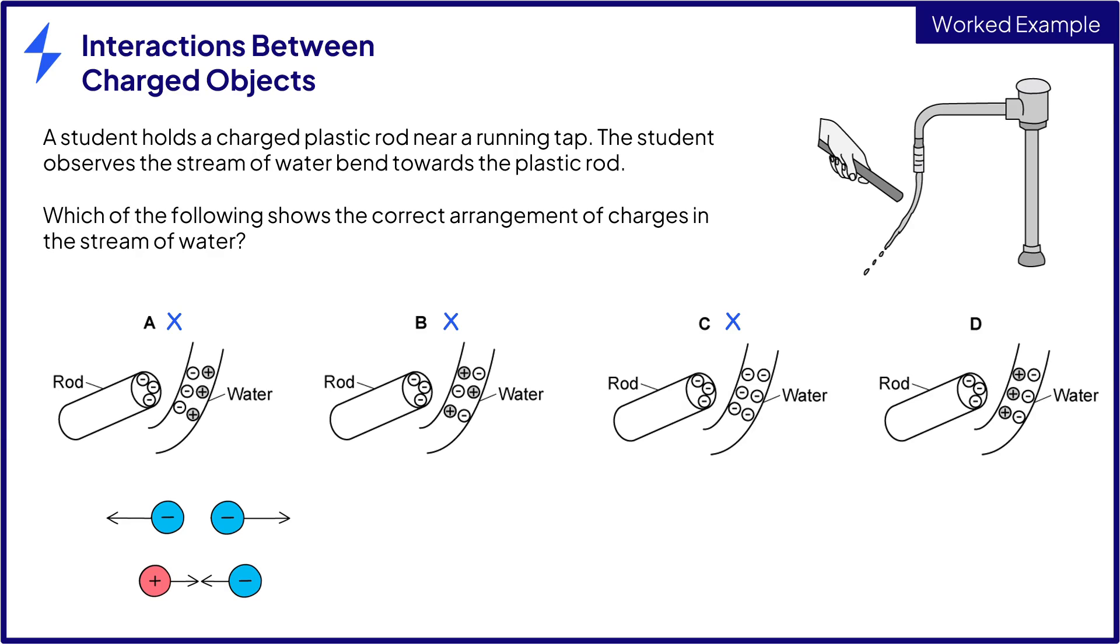D is showing positive charges attracted to the negatively charged rod. The presence of the negative charges has caused the water molecules to move so that the positively charged areas are closest to the rod. In this diagram we can see that opposites are attracted. So the correct answer is D for one mark.